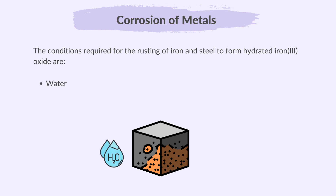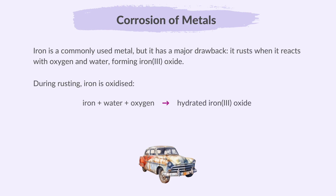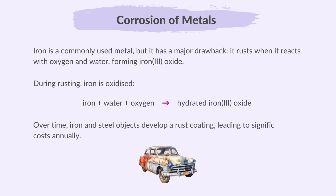The conditions required for the rusting of iron and steel to form hydrated iron 3 oxide are water and oxygen. Moisture or water is necessary for the rusting process, and oxygen from the air is needed for the oxidation of iron. Iron is a commonly used metal but it has a major drawback — it rusts when it reacts with oxygen and water, forming iron 3 oxide. During rusting, iron is oxidized. Over time, iron and steel objects develop a rust coating, leading to significant costs annually.